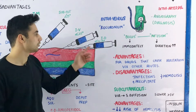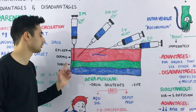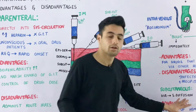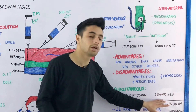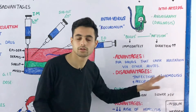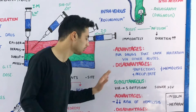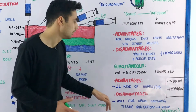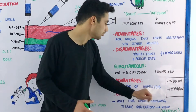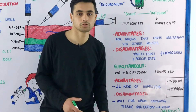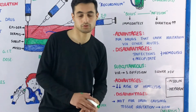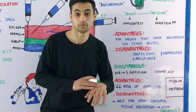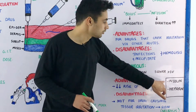For the subcutaneous route, the drug is injected into subcutaneous tissue at a 45-degree angle, as shown in the diagram. It uses simple diffusion and is slower than IV injection. The major advantage is that it lowers the risk of hemolysis. The disadvantage is that it is not suitable for drugs that cause irritation of the skin or subcutaneous tissue, as some drugs can cause necrosis. Major drugs given subcutaneously include insulin and heparin.